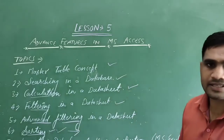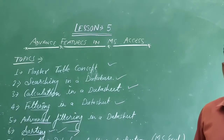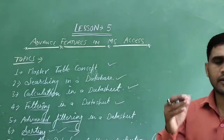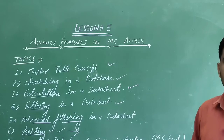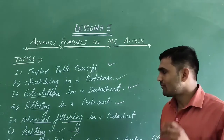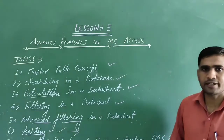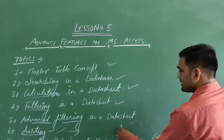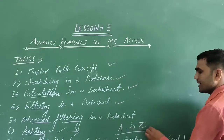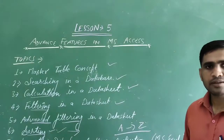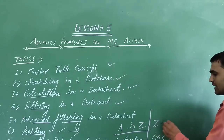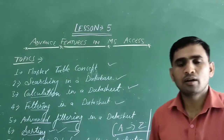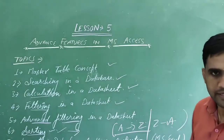Sorting is very important because when we type records into a database table, they are in no particular order — there is no ascending or descending concept at entry time. After that, we can sort the data using the sorting option: ascending to descending, A to Z, or Z to A. Using the ascending or descending feature, we can sort our data in the database.